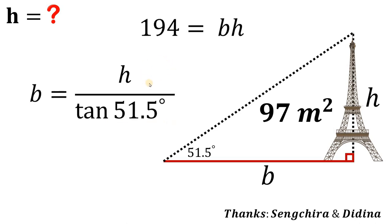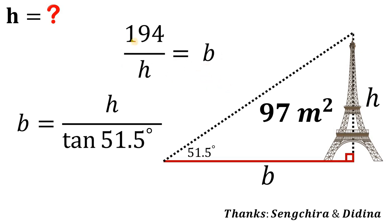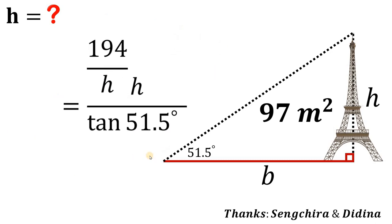Now we will do the same thing with our first result to get B in terms of H. Dividing both sides of 194 = B·H by H gives us B equals 194 over H. Note that B is also equal to H over tangent of 51.5 degrees, so we can equate these two expressions: 194 over H equals H over tangent of 51.5 degrees.